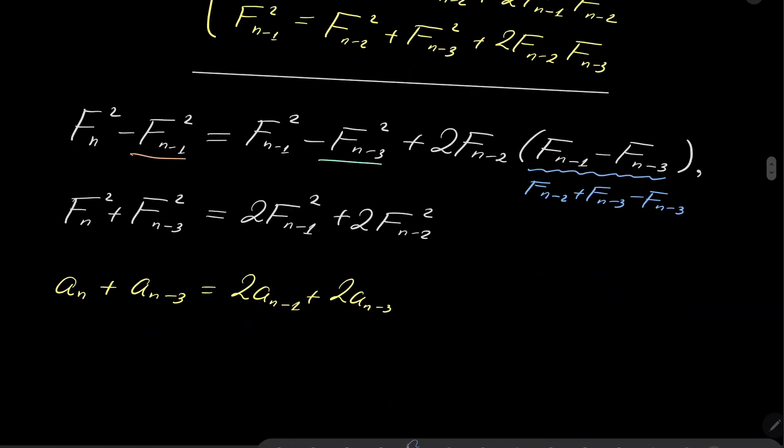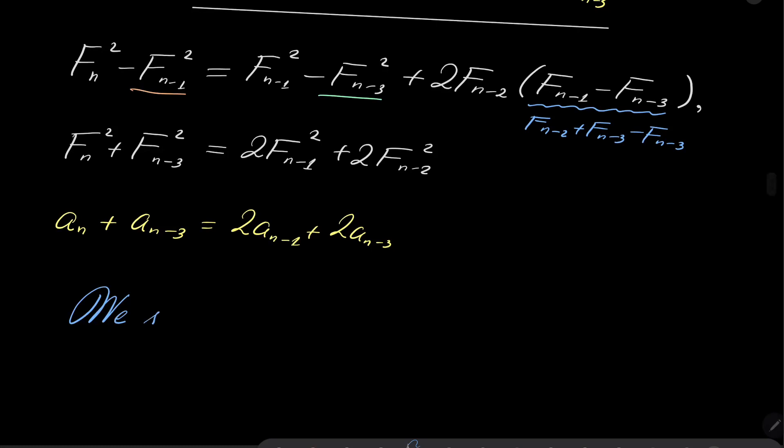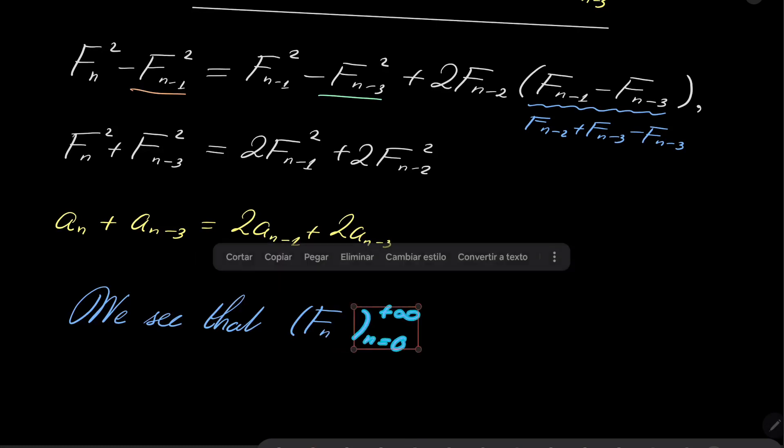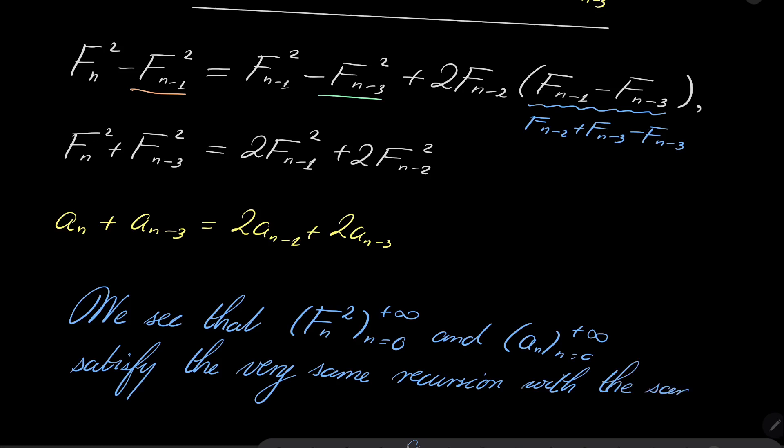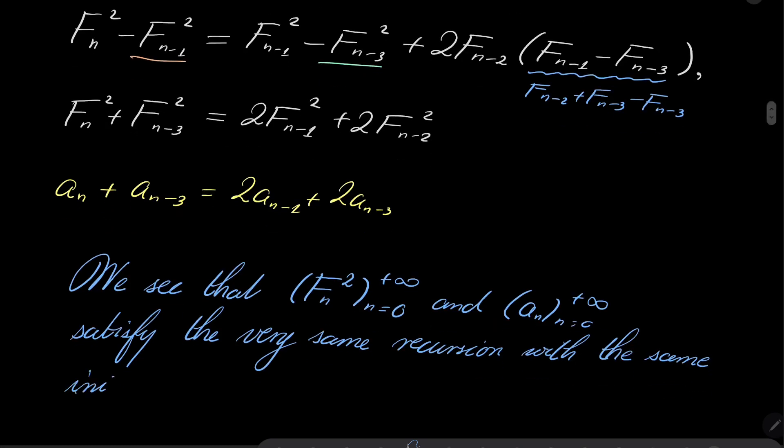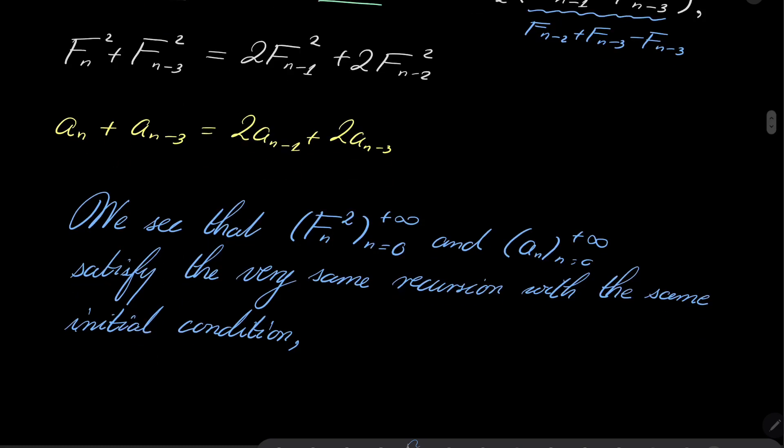It's the very same recursion with the very same initial conditions. So, maybe let's write it that we see that squares of Fibonacci sequence and our sequence A_n satisfy the very same recursion with the same initial conditions, which means...